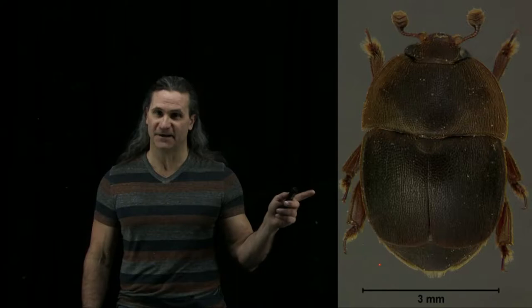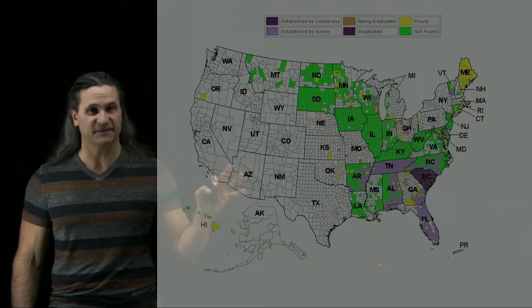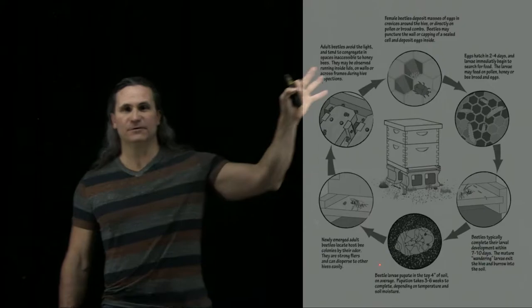Okay class, we have one more pest to look at and that is the small hive beetle. The small hive beetle has pretty good distribution in America and in most places that the honey bee occurs, because they live in the honey bee colony.